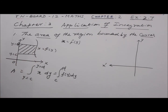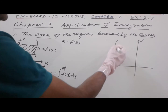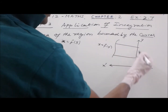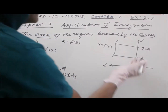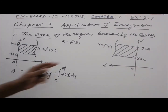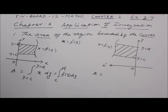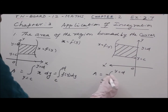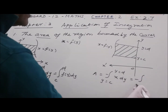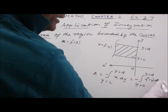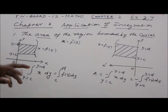Suppose the same curve x = f(y) covers the left of the y-axis, between limits y = c to y = d. In this case, the formula to find that area is: Area = -∫(y=c to y=d) x dy, or -∫(c to d) f(y) dy.